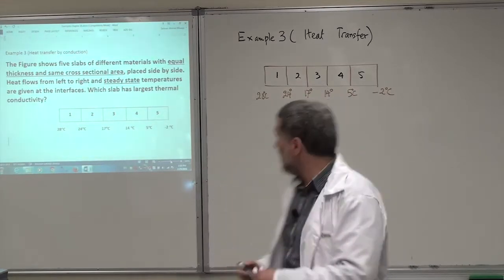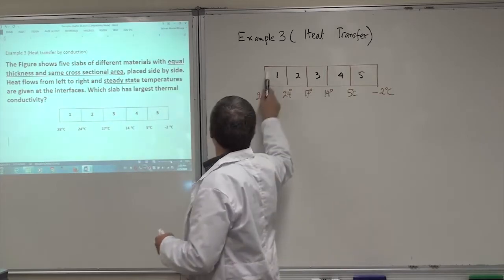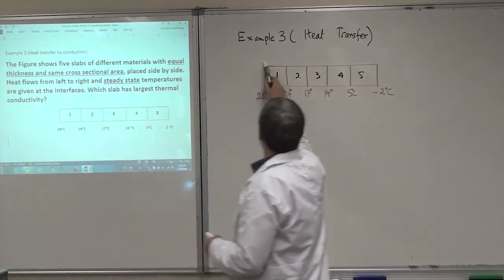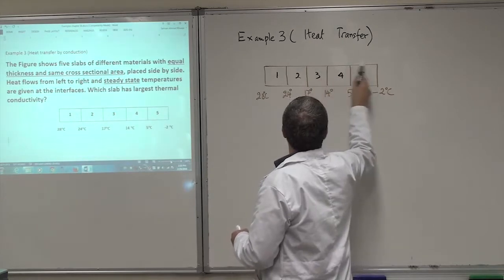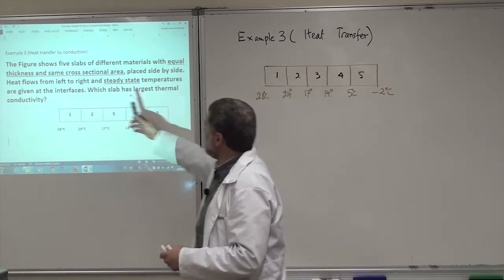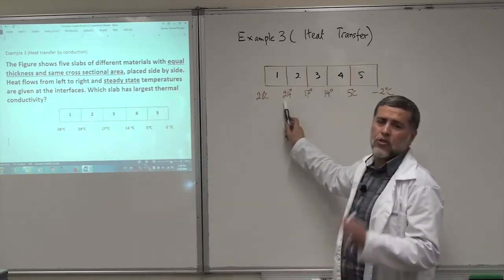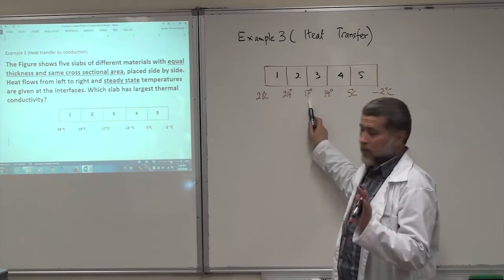Now, it's asking about, first of all, all of them, they have the same cross-section area and same length. So the lengths are the same in all materials, and the same cross-section area A. And we are in the steady state, which means, as a function of time, this temperature is not changing, and this is not changing. Steady state.